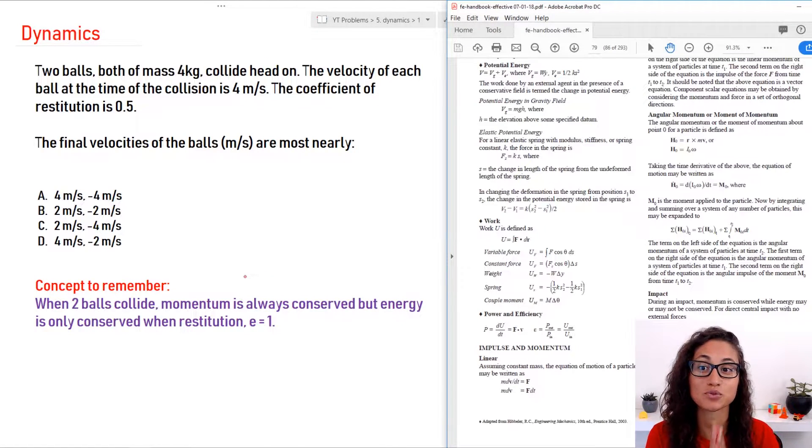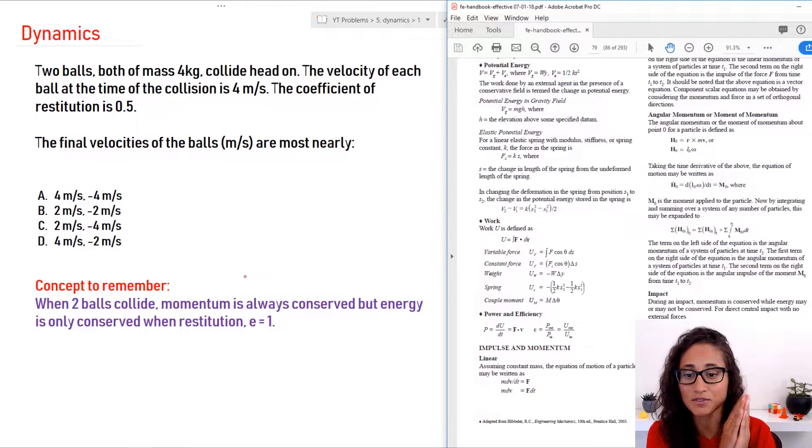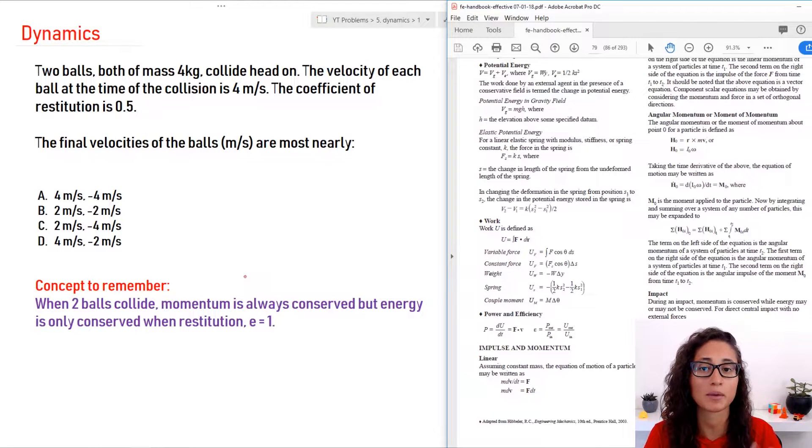Okay guys, so this is actually a really easy problem. I got a very similar question in my FE exam. So let's get to it. We have two balls, both of mass four kilograms, they collide head-on. The velocity of each ball at the time of the collision is four meters per second. The coefficient of restitution is 0.5, and we want to find the final velocities of the balls.